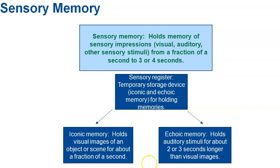When we talk about sensory memory, you need to know the two different types: iconic memory and echoic memory. Iconic memory is visual images — if I tell you to think of the Mona Lisa, you can picture it in your head. That's iconic. Echoic memory is auditory — if I tell you to think about your mother's voice, you can almost hear it in your mind. Just remember: iconic memory is visual images, echoic memory is auditory.